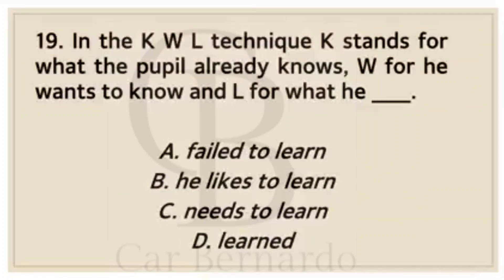Number nineteen: In the KWL technique, K stands for what the pupil already knows, W for what he wants to know, and L for what he blank. Letter A: Failed to learn. Letter B: He likes to learn. Letter C: Needs to learn. Letter D: Learned. Answer: Letter D, Learned.